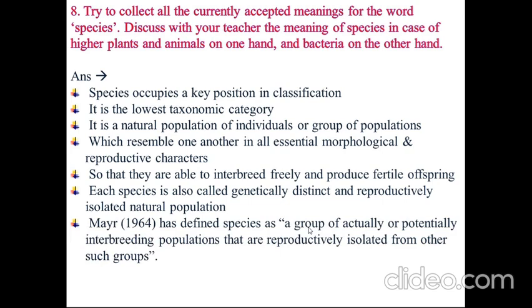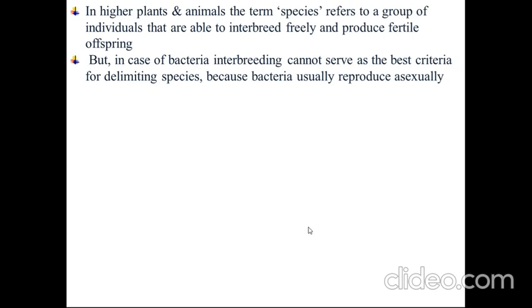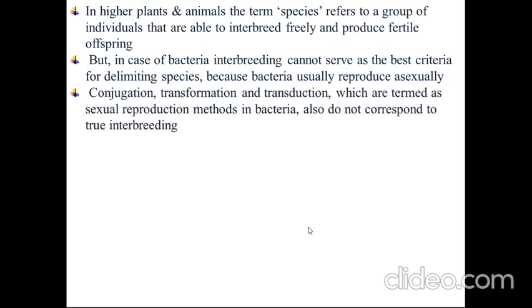Mayr, in 1964, defined species as a group of actually or potentially interbreeding populations that are reproductively isolated from other such groups. In higher plants and animals, the term species refers to a group of individuals that are able to interbreed freely and produce fertile offspring. But in case of bacteria, interbreeding cannot serve as the best criteria for defining species, because bacteria usually reproduce asexually. Conjugation, transformation, and transduction, which are termed as sexual reproduction methods in bacteria, also do not correspond to true interbreeding.